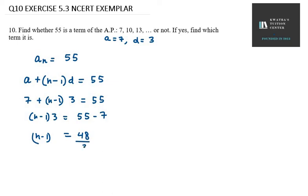Now let's take 3 down, it will be in division. So 48 divided by 3, it will be 16. Now it's minus 1. Minus 1 to right-hand side, so it will be plus 1. So n equals 17.